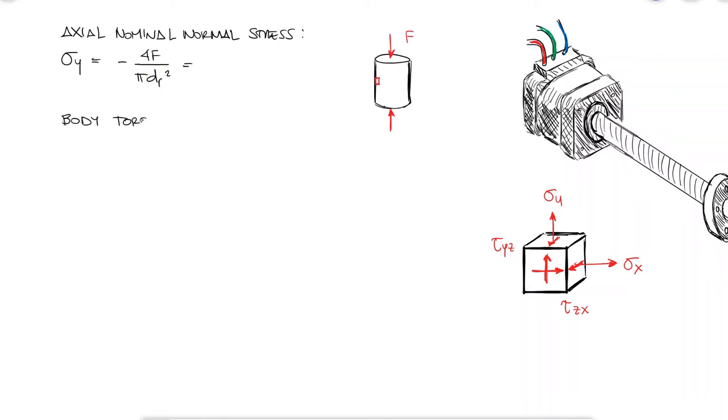We know that tau yz is the body shear stress due to the torsional moment or the torque required to raise the load, TR, and again we use the root diameter because it's affecting the body of the screw.